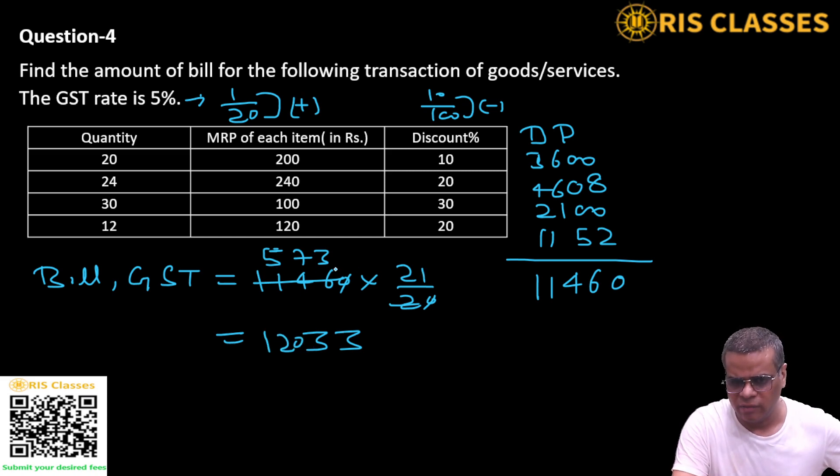Let me check again. 21, 3, 63. 6 carry. 21, 7, 47. 147 and 6 is 153 carry. 21, 5, 15. 105 and 15 is 120. That is your final answer, 12033.